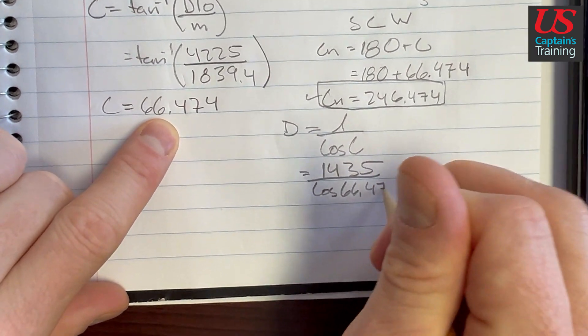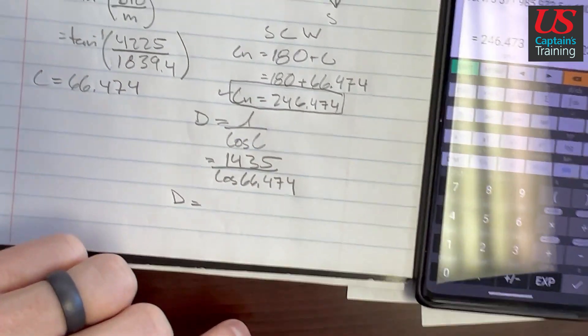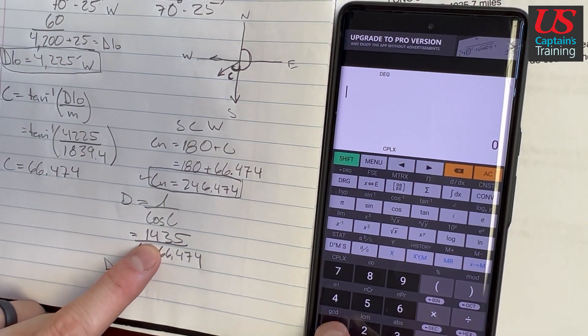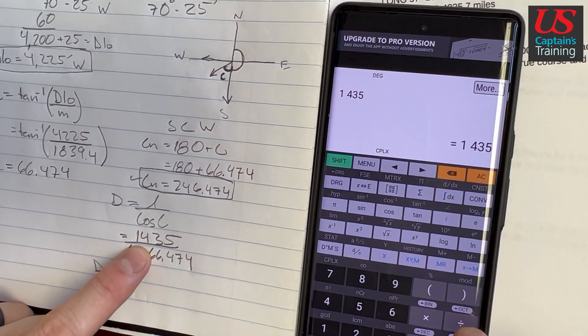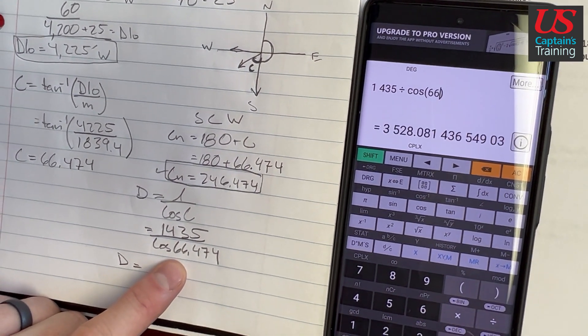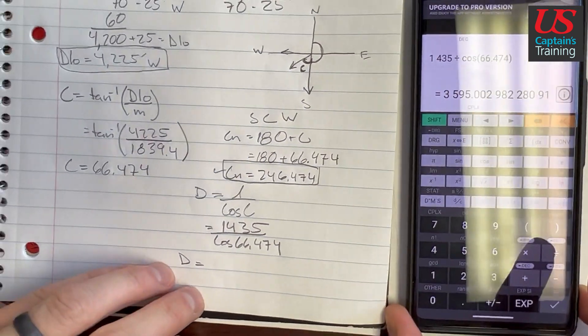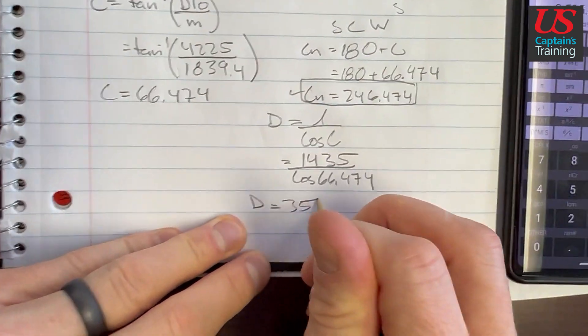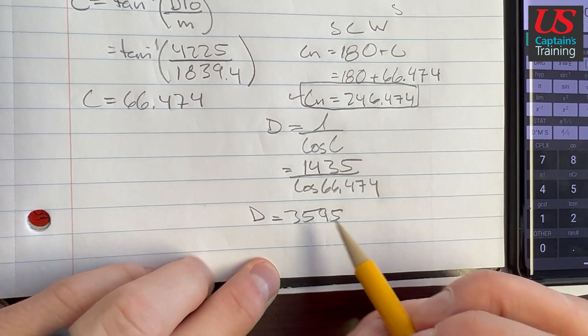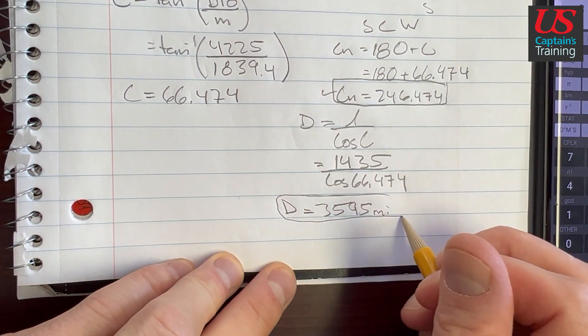So distance will equal, punched in the calculator, 1435 divided by the cosine of 66.474. That's equal 3595. And then there's two zeros, so we're good. 3595, it's going to be in miles. And this is one of our answers.